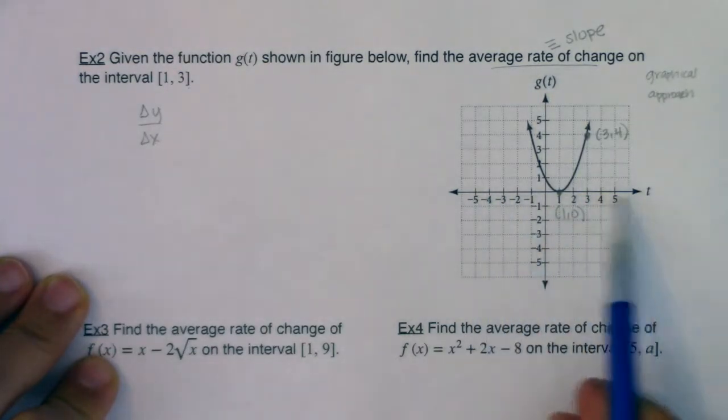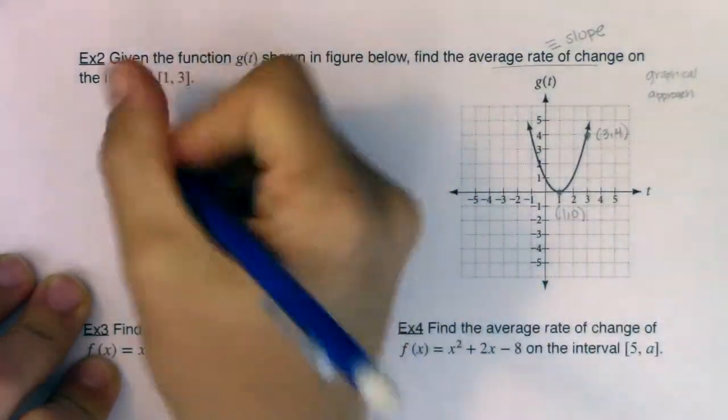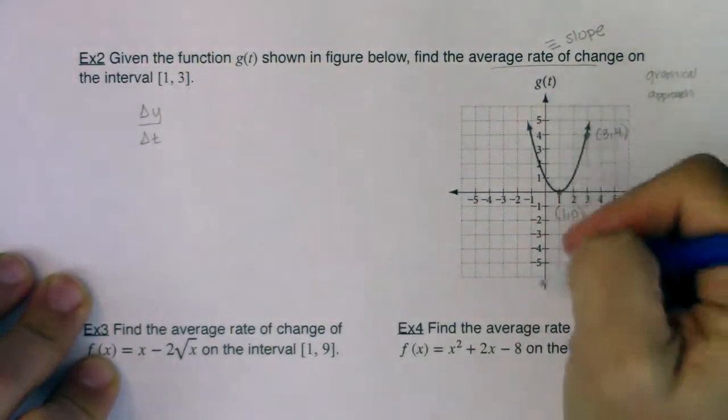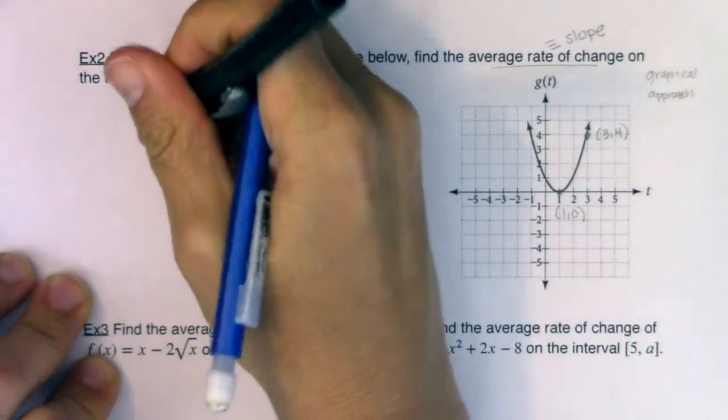So our x-axis isn't labeled with x's. It's labeled with t's. So this is going to be a t. And my y-axis, it's not y's, it's the g's. So this will actually be g.